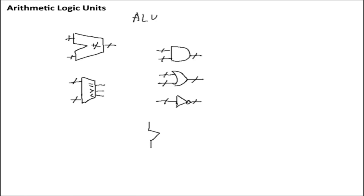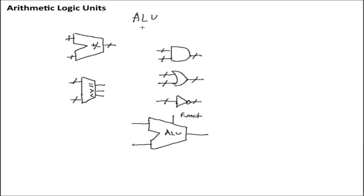If we draw this out in schematic form, it looks very similar to the adder. It's always going to have two inputs — inputs A and B — and you are going to have your output. You're going to have what is referred to as the function input, and the function input will determine what function the ALU is performing with inputs A and B. That output will be put on Q.